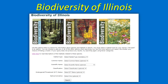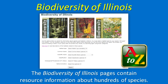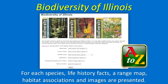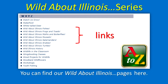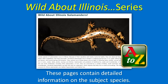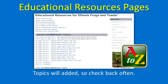The Biodiversity of Illinois pages contain resource information about hundreds of species. For each species, life history facts, a range map, habitat associations, and images are presented. A variety of searching options may be selected. You can find our Wild About Illinois pages here, which contain detailed information on the subject species. Click on these topics to be taken to a webpage listing the full range of IDNR educational materials and resources. Topics will be added, so check back often.